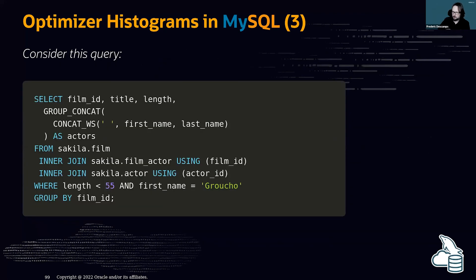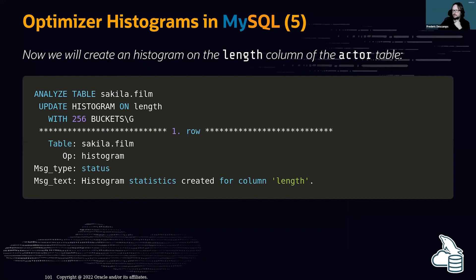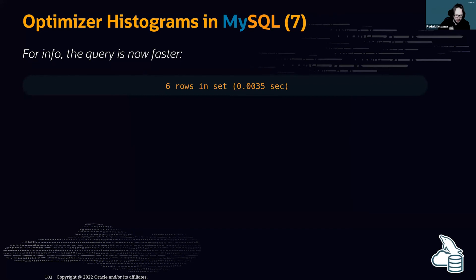For example, here is a query searching for a first name equal to 'Crucial' and a movie length less than 55 minutes — returning six rows. The default query execution plan does a full table scan. If I create a histogram with 256 buckets on the 'length' column using ANALYZE TABLE ... UPDATE HISTOGRAM ON length WITH 256 BUCKETS, the optimizer now does a full index scan instead of a full table scan, and the query is much faster.